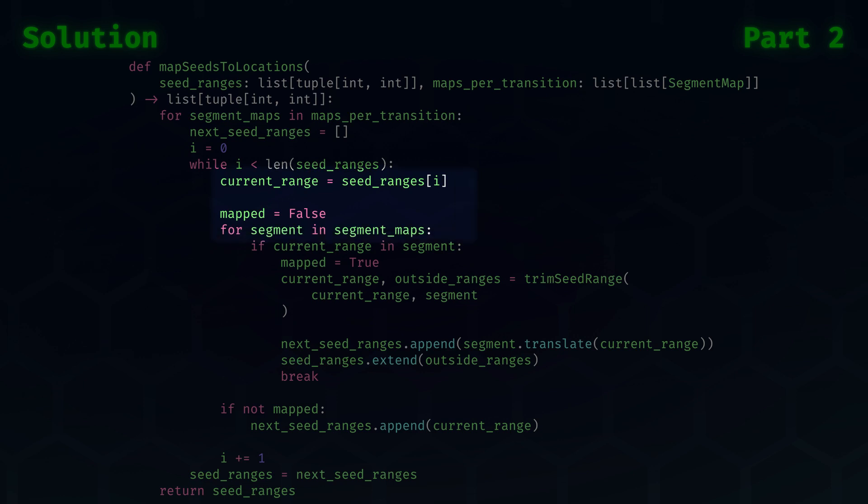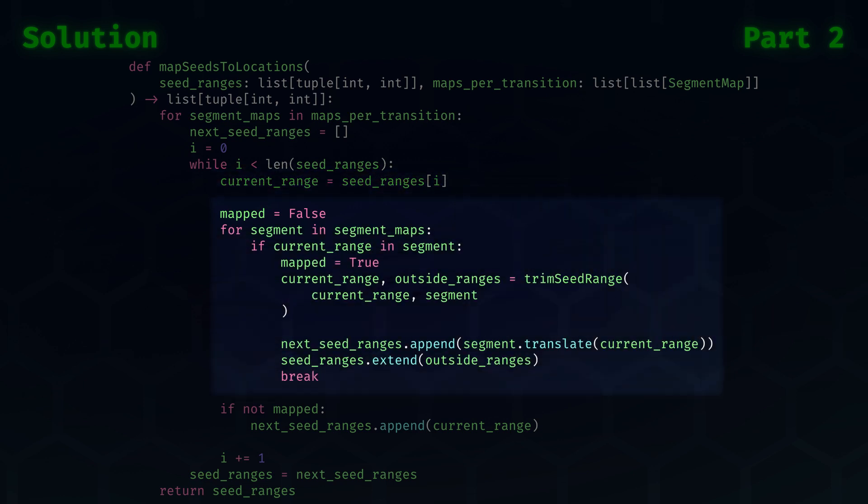After this, we start iterating over the segments to see if we can translate. If we overlap, meaning that our current range is in the segment, then we mark mapped as true. We then apply our trim function to update the current range and to get our trimmed off segments. Then we can simply translate our current range and add it to the next seed ranges. The trimmed off segments are added to the queue because we still want to process these with the current segment maps.